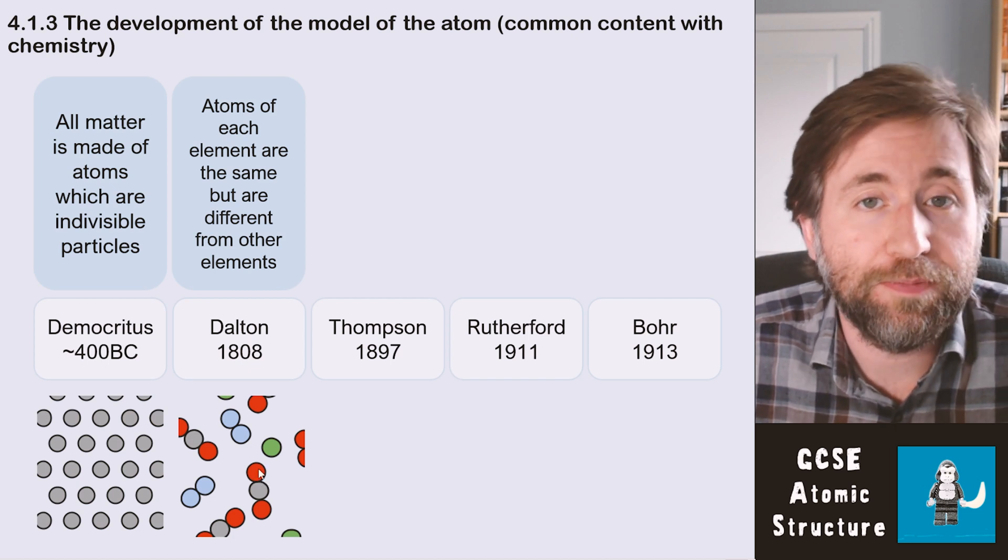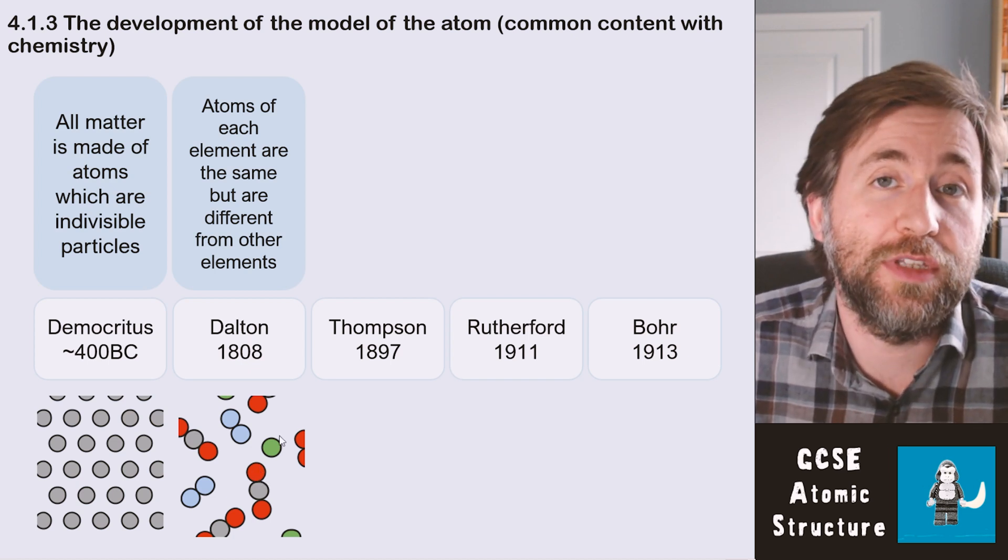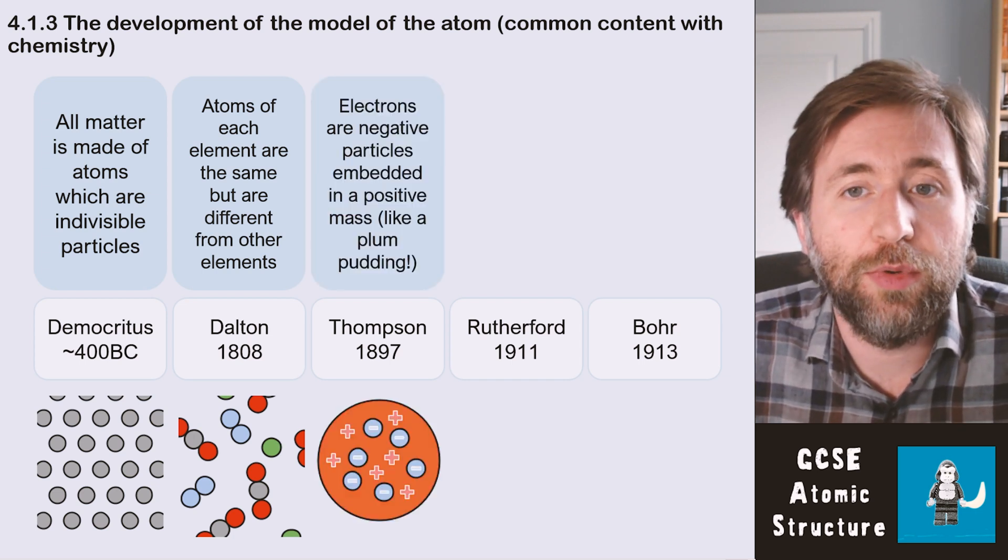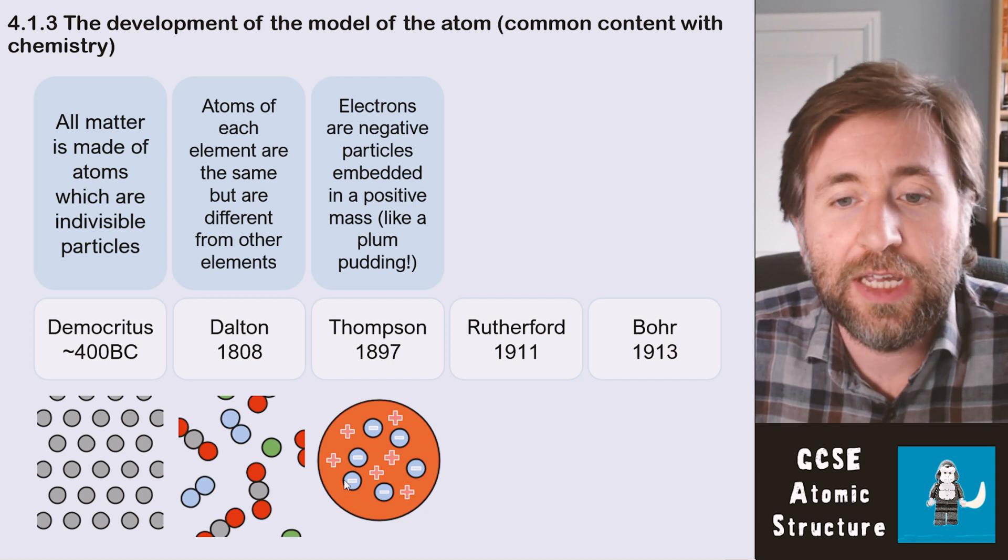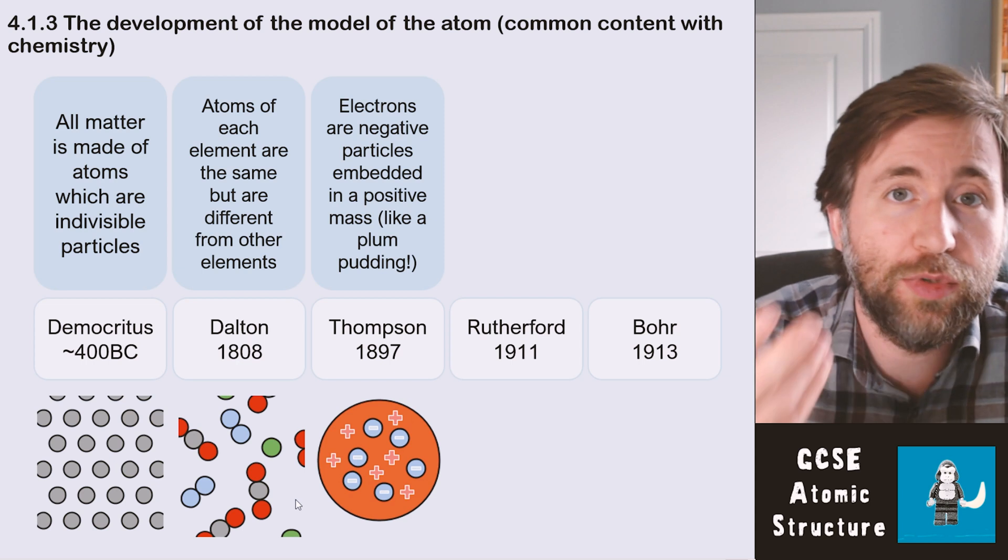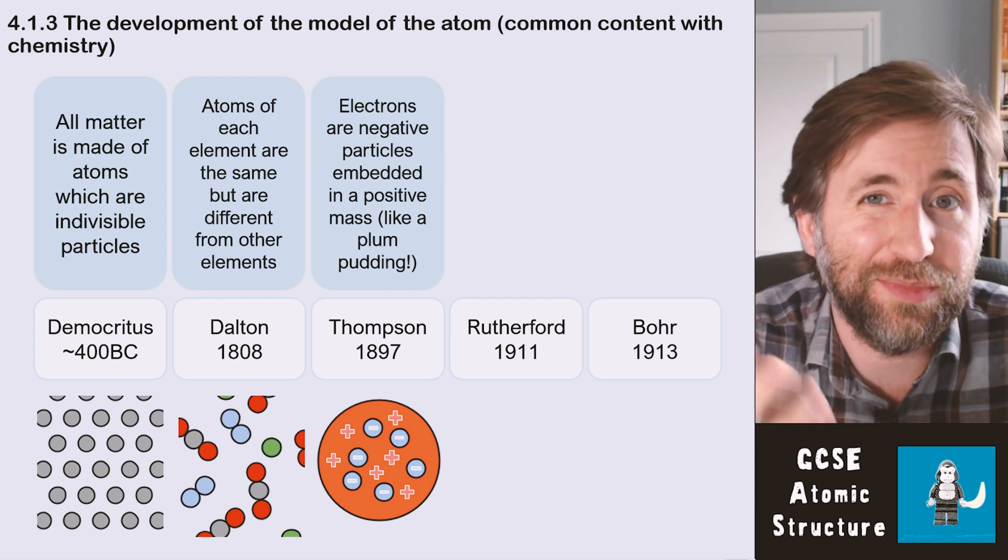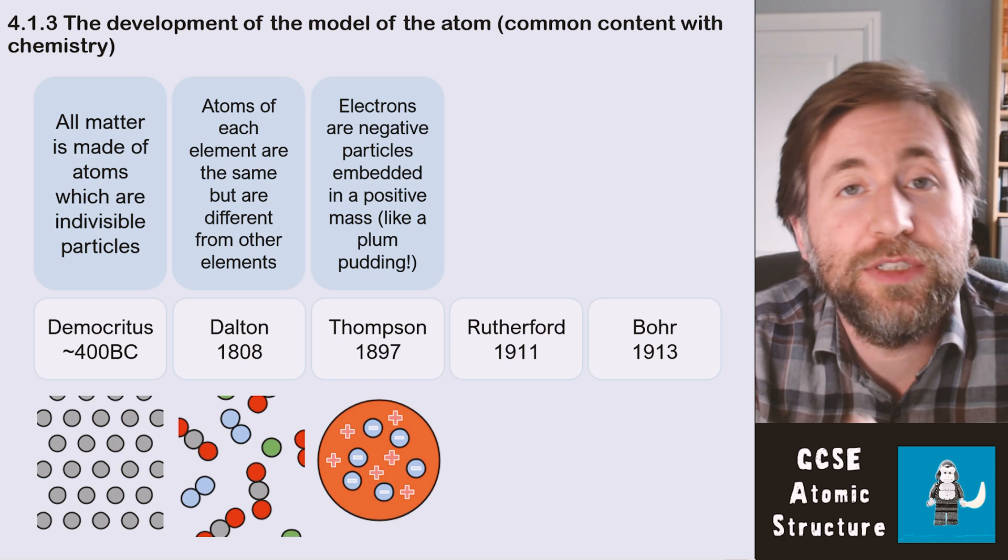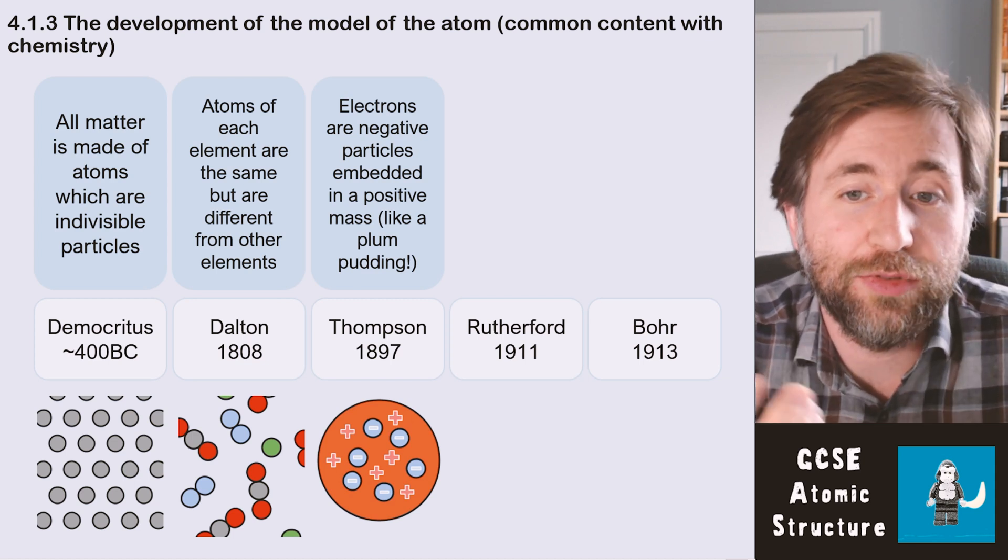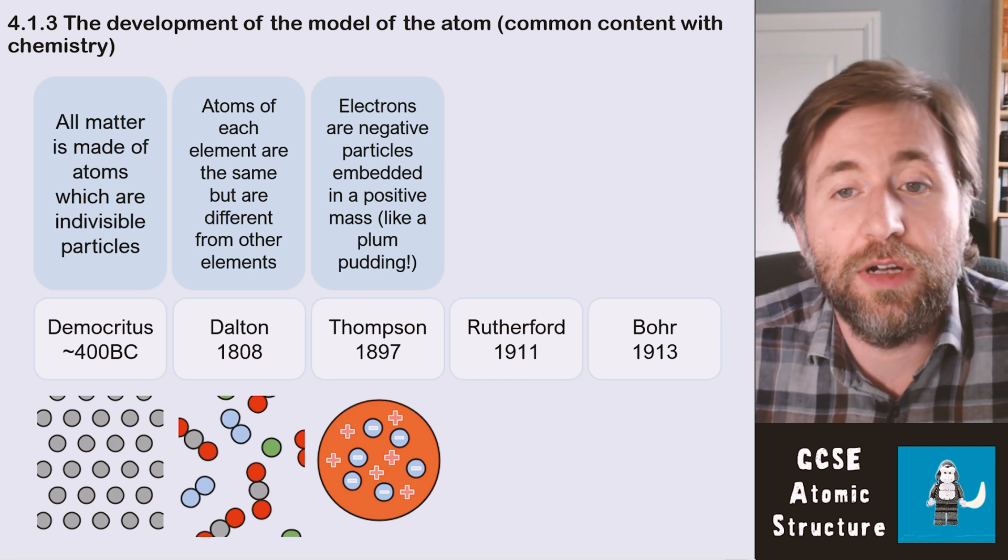Thompson, however, discovered the electron by working with cathode rays. He said therefore it can't be the case that an atom is the smallest thing. It can't be the case that an atom is indivisible because we found something which comes from an atom—we found something smaller than an atom, an electron.